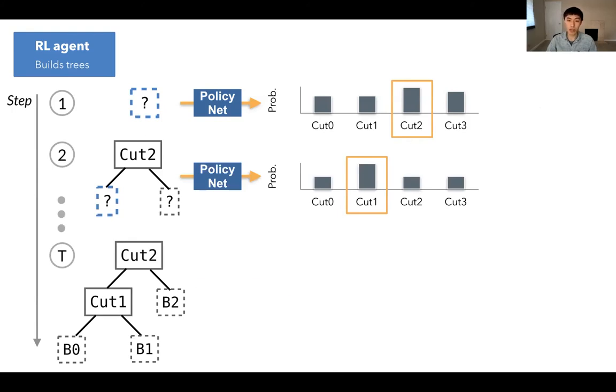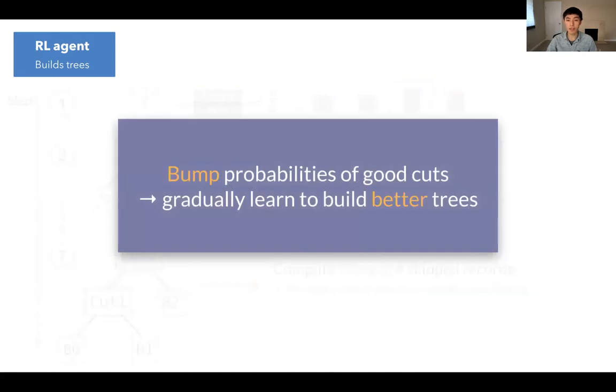So given the completed tree, we can compute the rewards, which are just defined to be the number of skipped records under this layout. Importantly, there's no query execution required in computing the rewards, because it's only query intersection checks. Now, we use an algorithm called PPO, which is a scalable RL algorithm to update the model. And it is also used by other RL successes, such as learning to play Dota from OpenAI. The details are not important. And the intuition of the update is simply to bump up the probabilities of good cuts. So the next time the agent has more incentive, or is more likely to make those good cuts. And gradually, the agent is going to learn to build better and better trees.